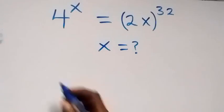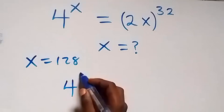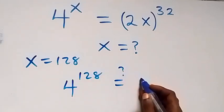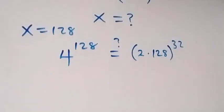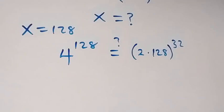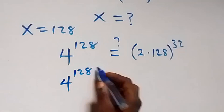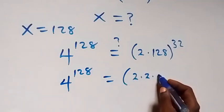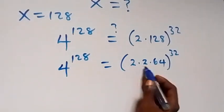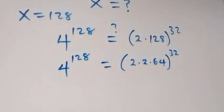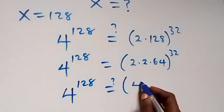Let's check if this satisfies the given problem. When we substitute x equals to 128, we have 4 raised to power 128 — will it equal to (2 × 128) raised to power 32? On the right side we can write 2 × 128 as 2 × 2 × 64, and we have 4 raised to power 128 equals to (2 × 2 × 64) then raised to power 32, which is the same as (4 × 64) raised to power 32.